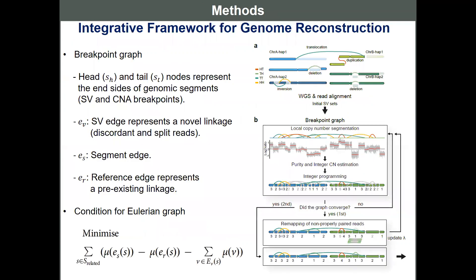For that, we developed an integrative framework for genome reconstruction called InfoGenomal. The method is composed of three parts: breakpoint graph construction, haplotype graph construction, and Eulerian path finding with minimum entropy search. Here, I'm going to explain the first part, breakpoint graph construction.